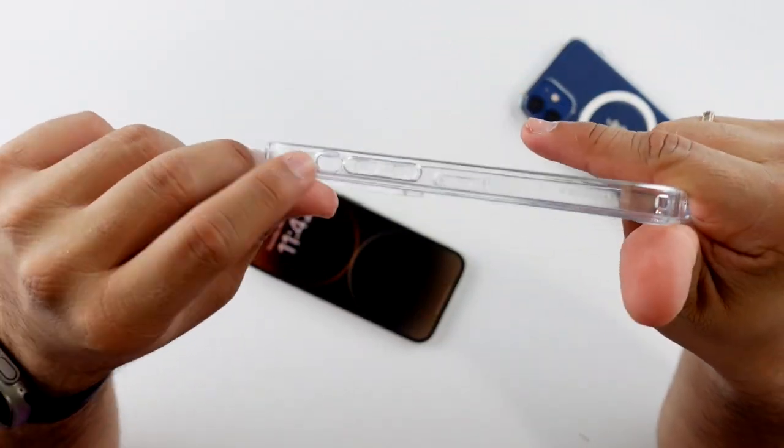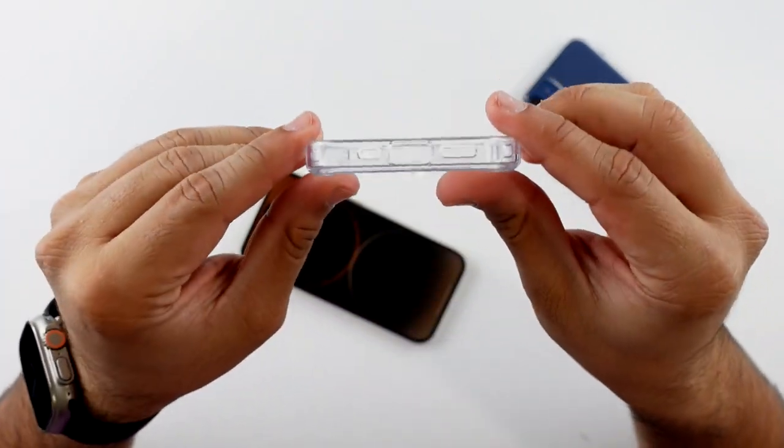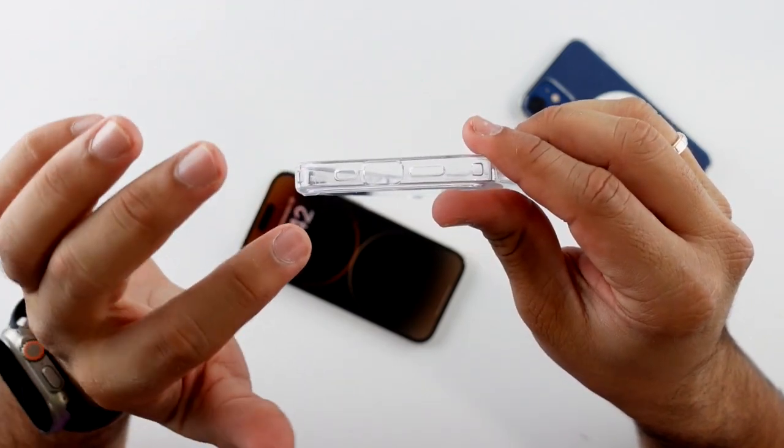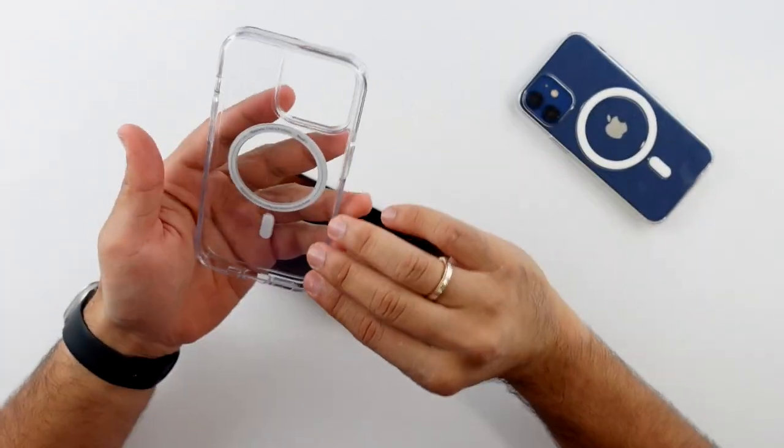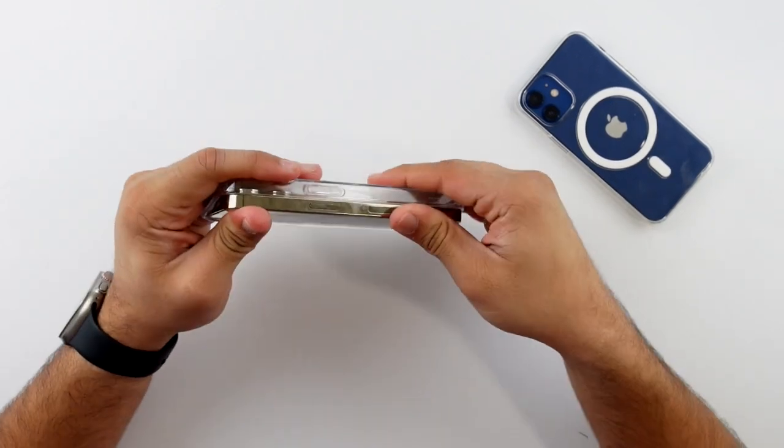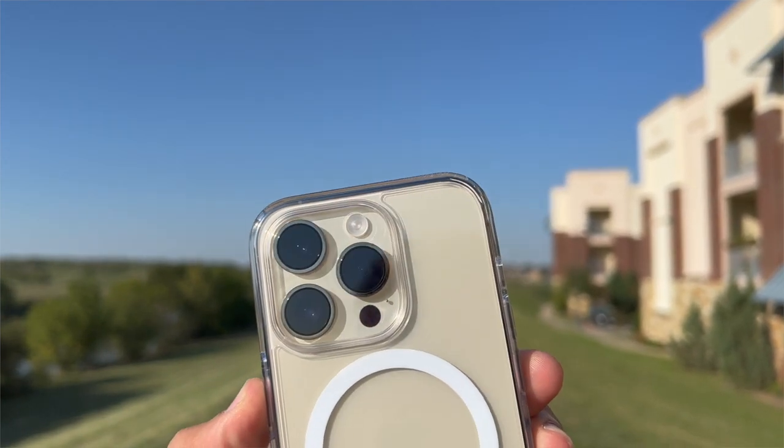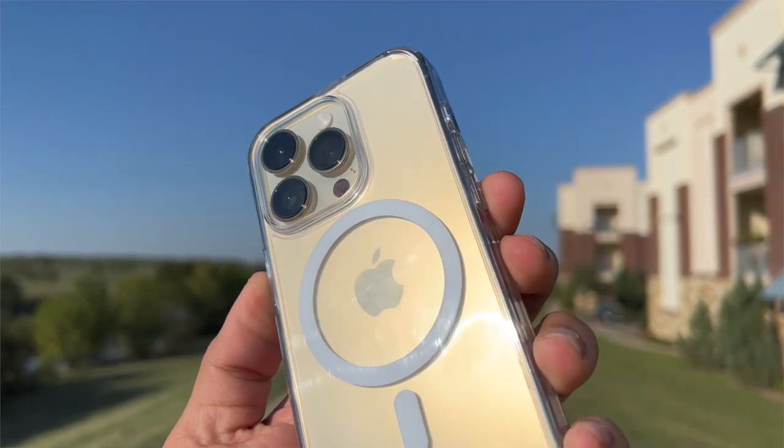On the bottom, very clear and clean design, just cutouts for the microphone, the charger and the speaker grill. Let me go ahead and put this phone into the case. And there we go. That looks pretty clean and pretty slick. This is what it looks like in the phone.